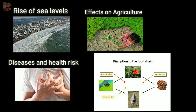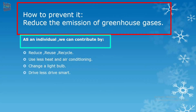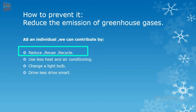So friends, there is an urgent need to stop global warming to save our mother Earth. To prevent it, we need to reduce the emission of greenhouse gases. The government must take steps towards it, but as individuals we can also contribute. First is reduce, reuse, and recycle — we can reuse newspaper, glass, aluminium cans, and so on.